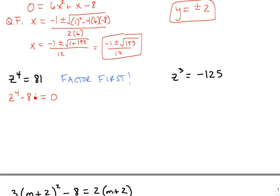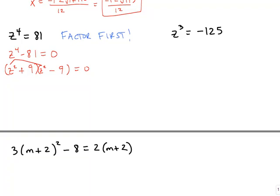This fits the pattern x^(even) − y^(even) = 0, because both z⁴ and 81 are perfect squares. z⁴ = (z²)² and 81 = 9². So we factor as a difference of squares: (z² + 9)(z² − 9). Now z² + 9 does not factor further because it's a sum of two squares. However, z² − 9 is a difference of two squares, so it breaks down into (z + 3)(z − 3).